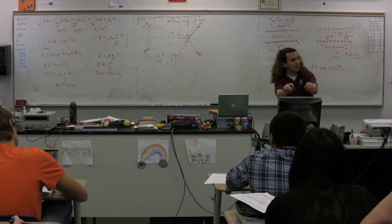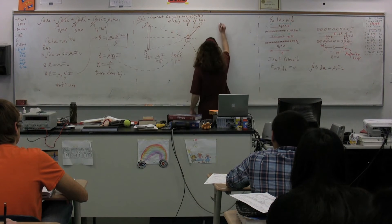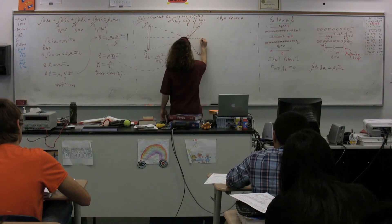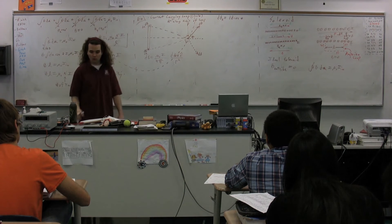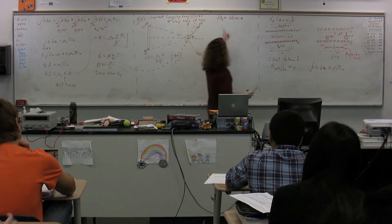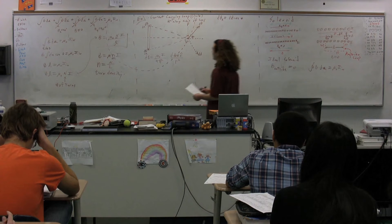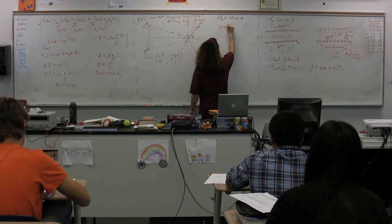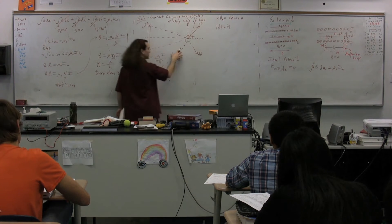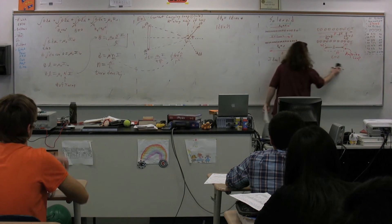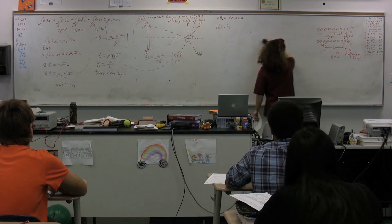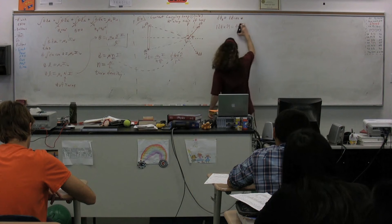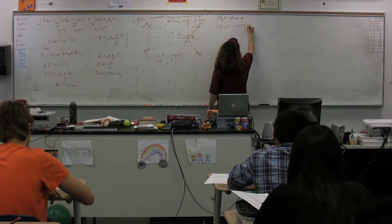The net magnetic field is going to be in the x-direction, so dB_x equals dB times the cosine of theta. The total magnetic field is the sum of all those dB's in the x-direction. Now let's look at Biot-Savart — let's pull out dS cross r-hat. We've already figured out the direction, so let's just find the magnitude: dS cross r-hat equals dS times r times sine of theta.